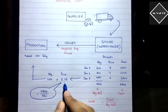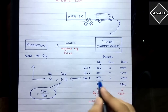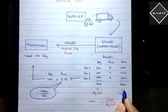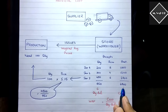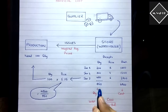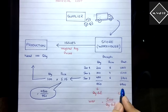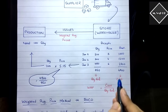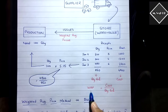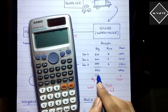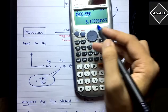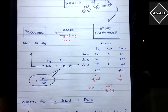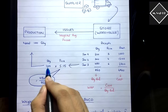It's simple: take the total cost of all stock available in your warehouse and divide it by the total quantity available. The total cost is 4,900 and the quantity is 950, so 4,900 divided by 950 equals 5.15. That is your weighted average price, and you will send those 100 units at that price.